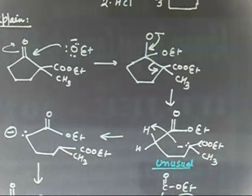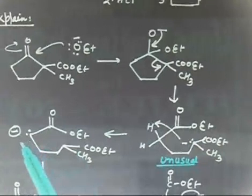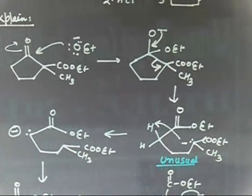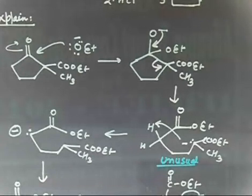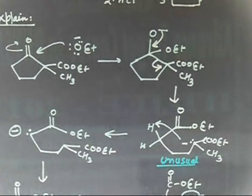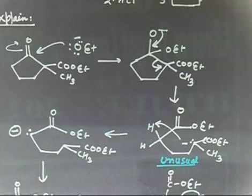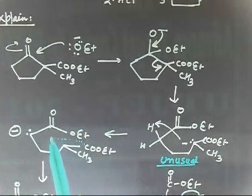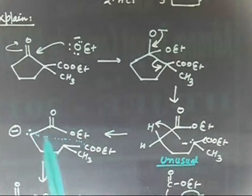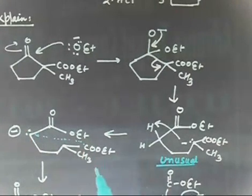Copy up to this point. If this carbanion takes H⁺, the carbanion has basically shifted. Now, what can you do next? This carbon needs to attach with the other carbon. So this carbanion can attack this carbon, and the OEt can leave, allowing me to rearrange this molecule.